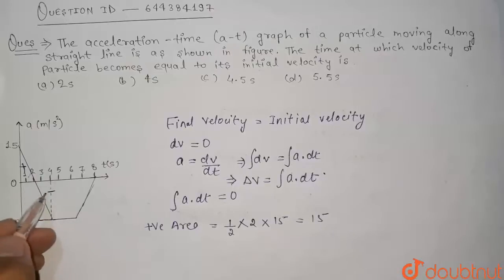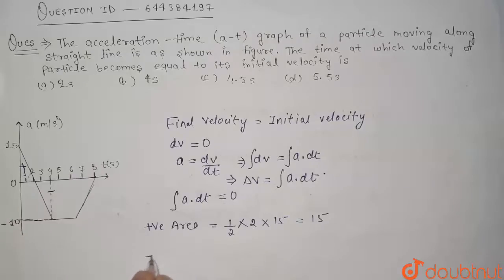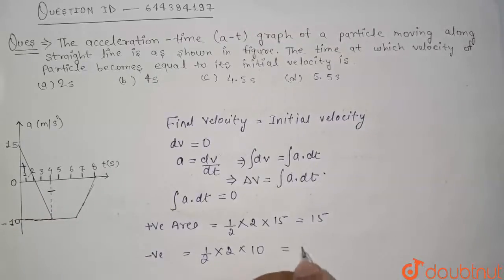This is positive. Now come to negative triangle. What is the area of this negative triangle? Area of this negative triangle is equal to half into base, that is 4 minus 2, which is 2, into height that is 10. So this comes out to be 10.